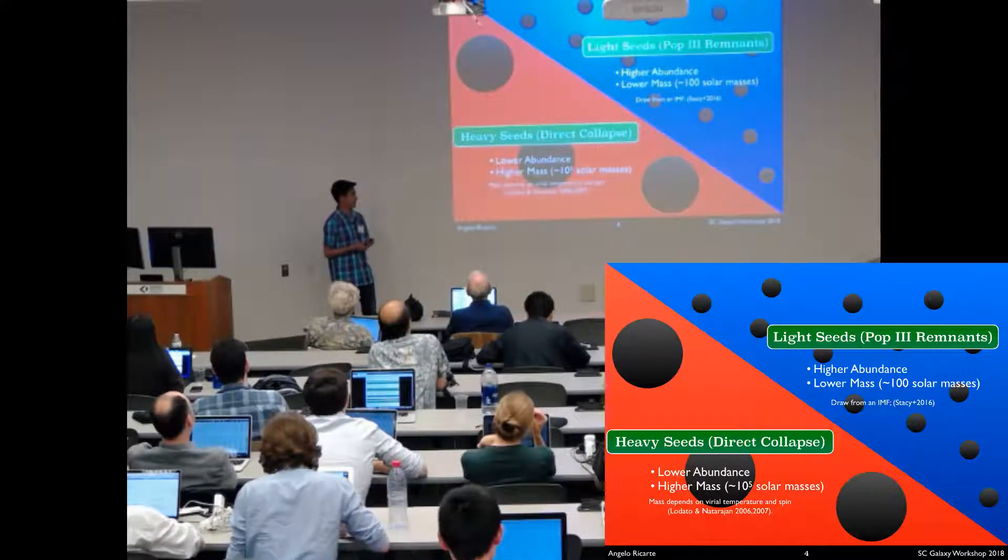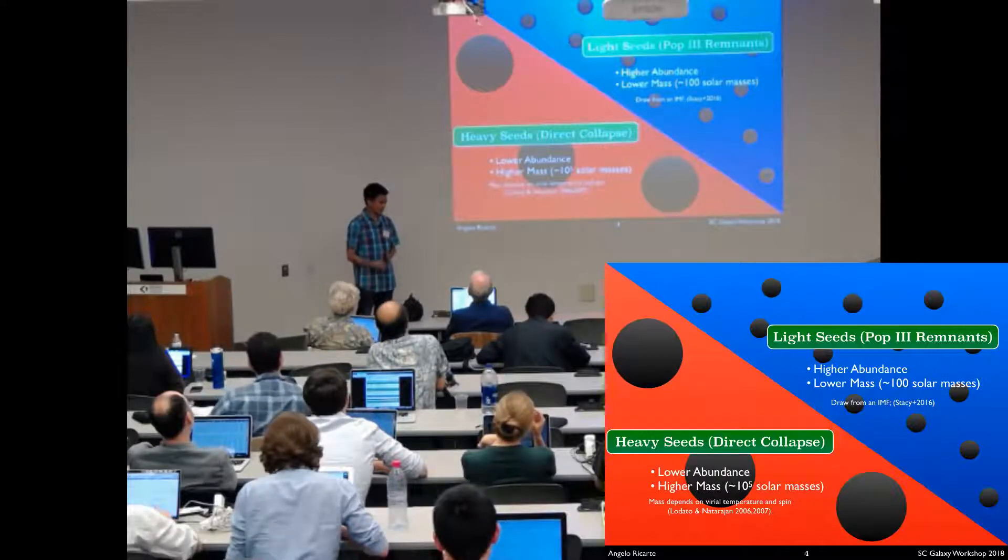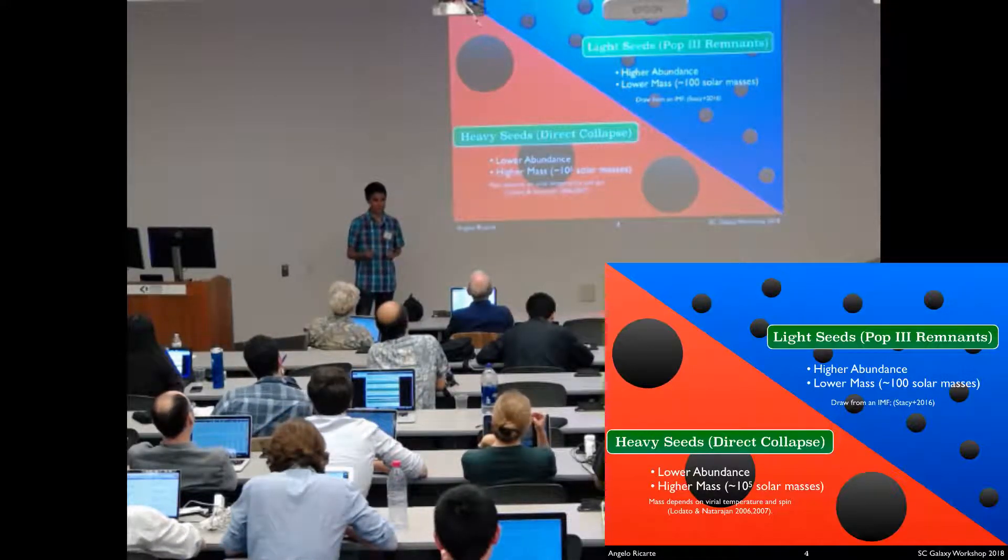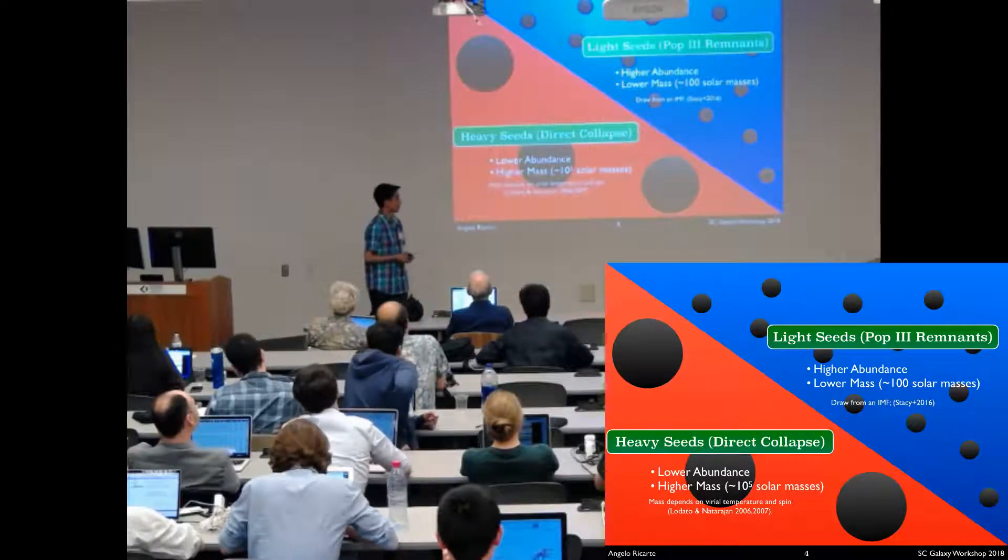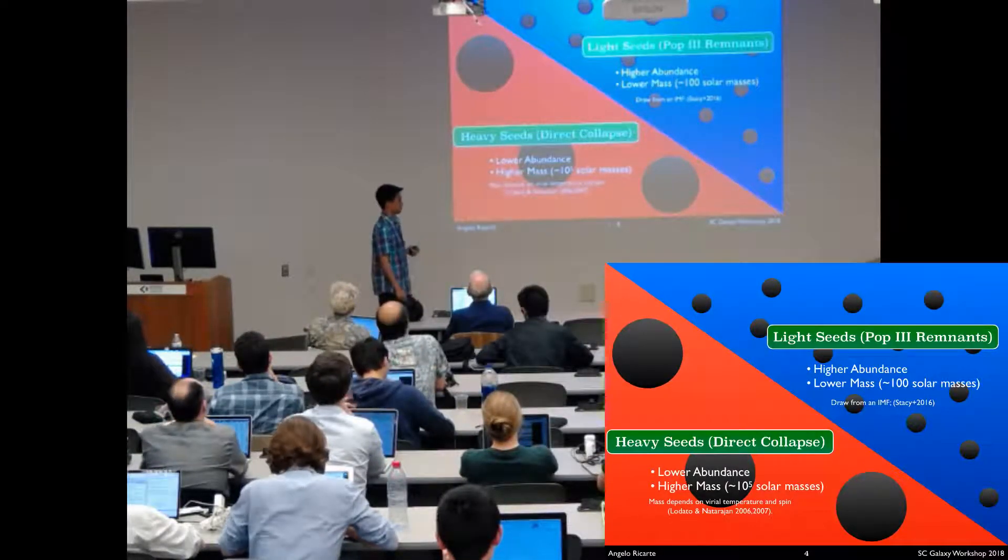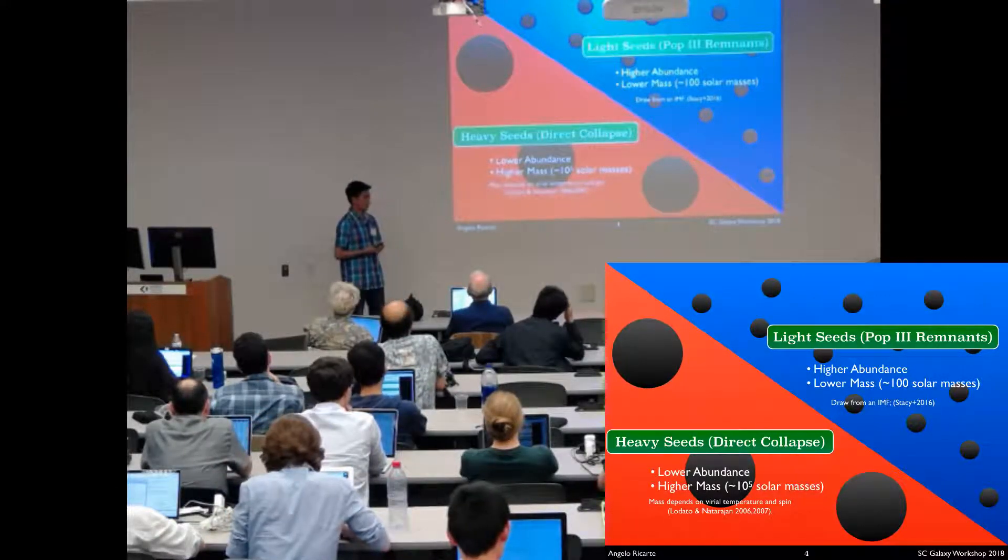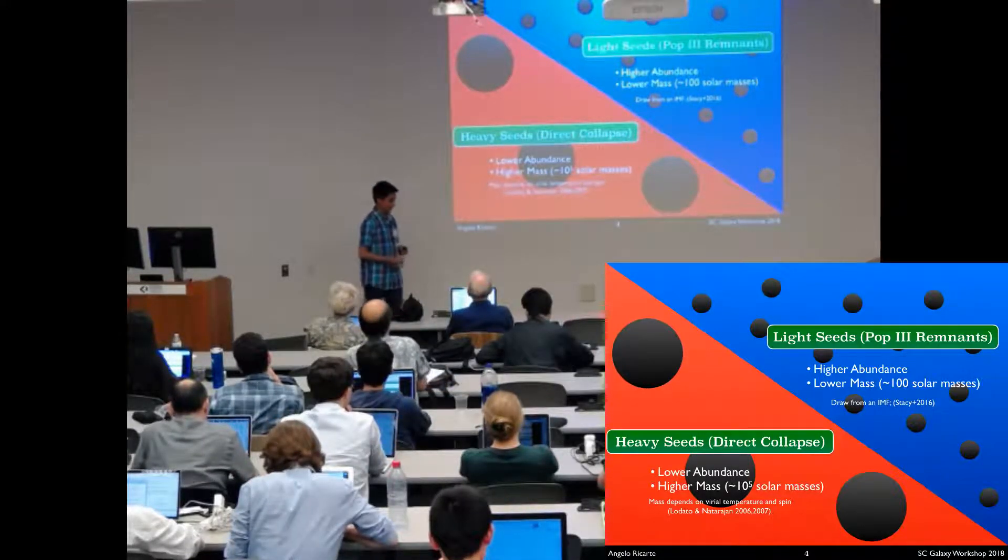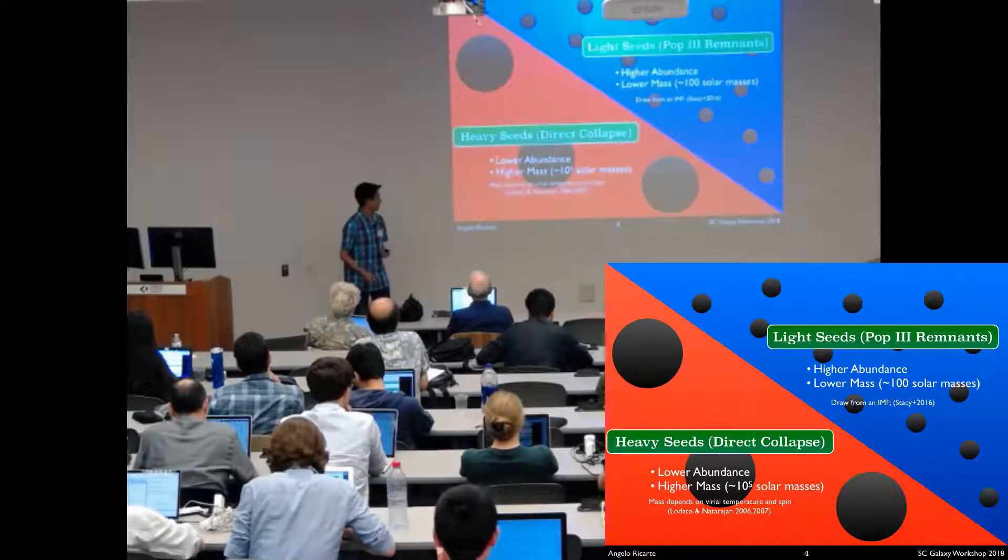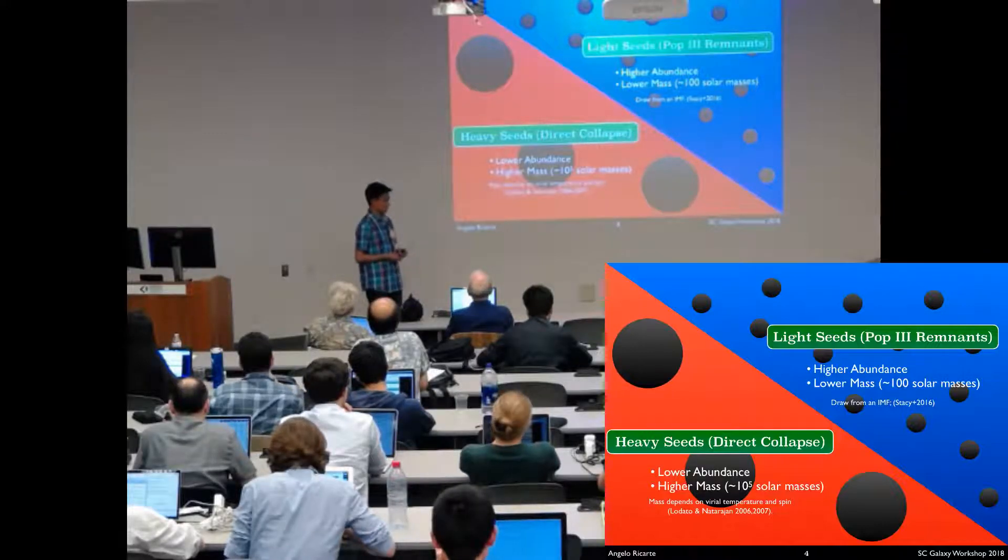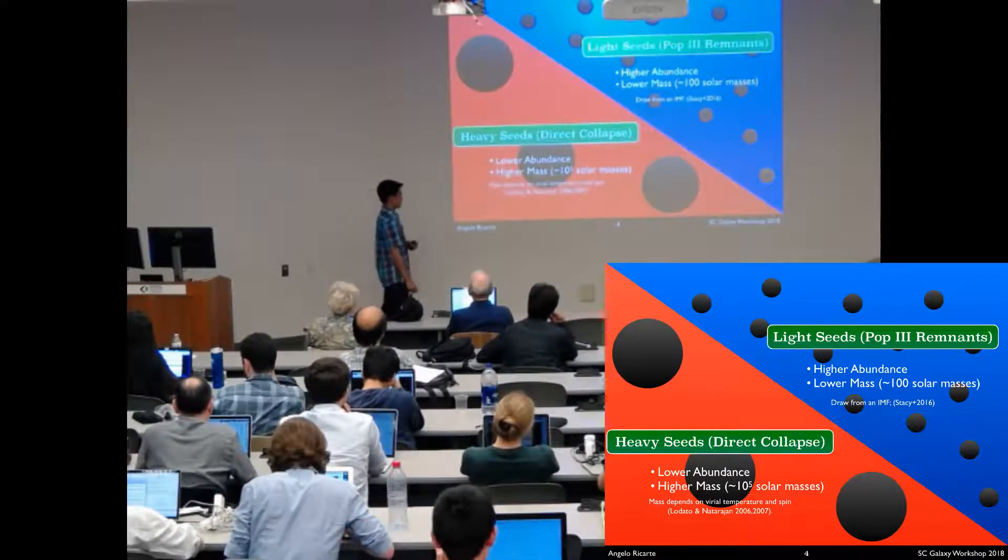We're focusing on distinguishing between these two broad classes of seeds. There are really two main salient properties of these seeding models that are important: the abundance and the initial masses. These pictures in the background are what you should have in mind. Pop III remnants are assumed to have higher abundance but lower masses. We draw from some IMF and put in a black hole of up to about 100 solar masses into any halo that's above a 3.5 sigma peak. Whereas the heavy seeds are assumed to have lower abundance owing to the rarity of conditions required to make them, but higher masses, up to say 10 to the 5 solar masses.